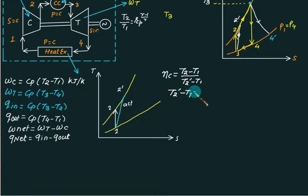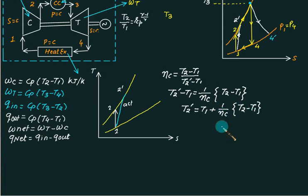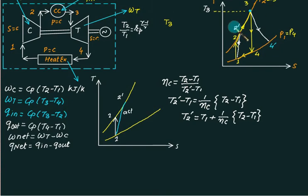Rearranging, eta_c equals (T2 - T1) divided by (T2-dash - T1), so T2-dash equals T1 plus (1/eta_c) multiplied by (T2 - T1). The objective is to find T2-dash directly. Normally you would first use the isentropic relation to find T2, then use the efficiency definition — two steps.